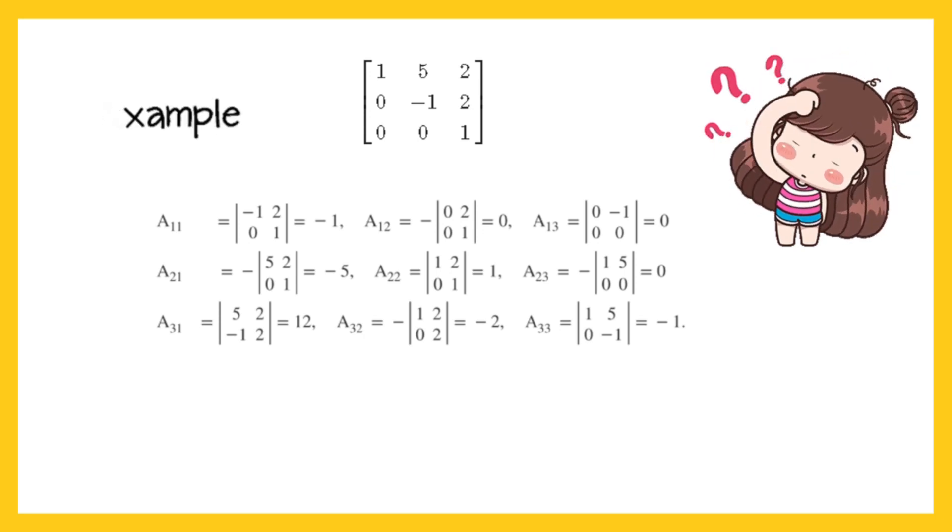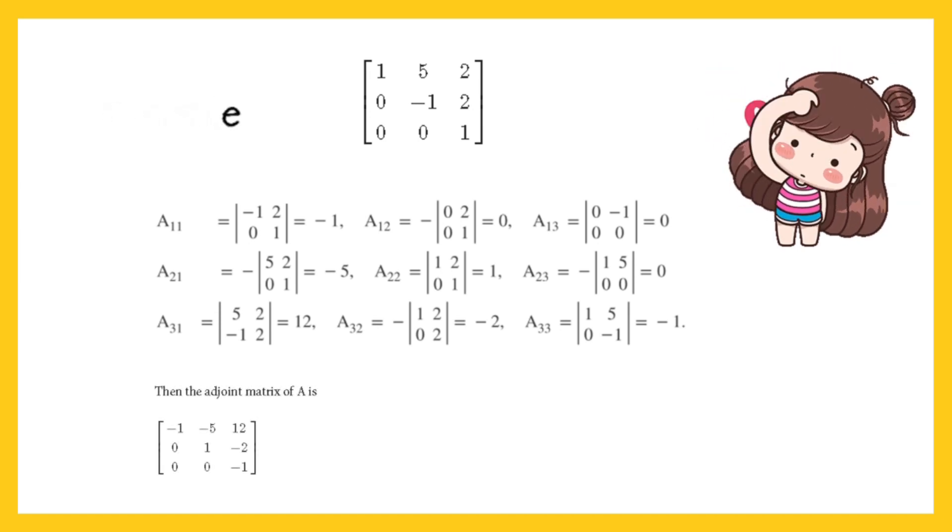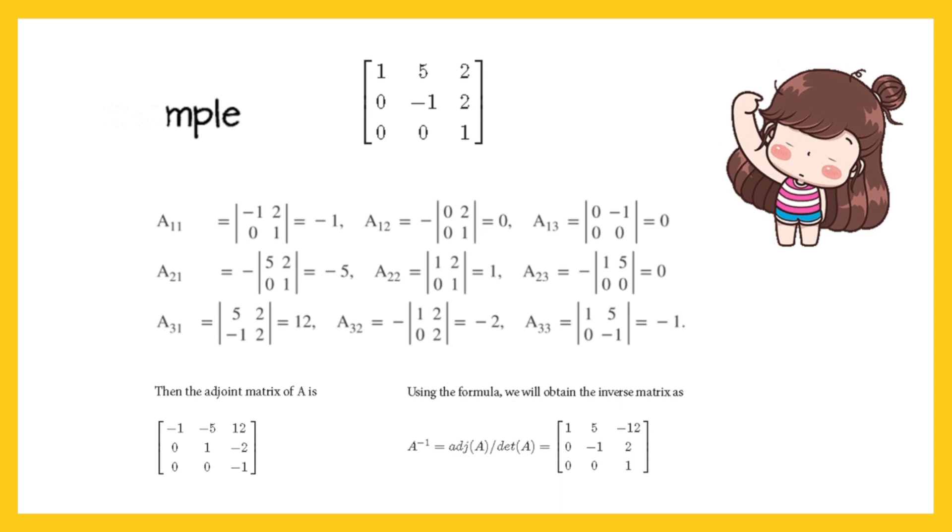To find the inverse using the formula, we will first determine the cofactors A_ij of A. Then the adjoint matrix of A is obtained. Using the formula, we will obtain the inverse as A inverse equals adjoint A upon determinant A, as given in the figure.